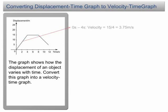For the first 4 seconds, the velocity is equal to 15 over 4, or 3.75 meters per second. From 4 to 8 seconds, the velocity is 0.